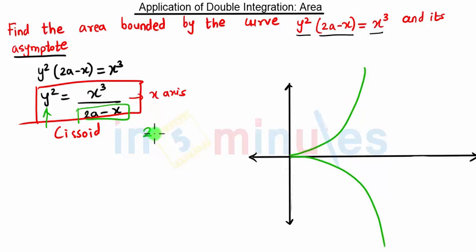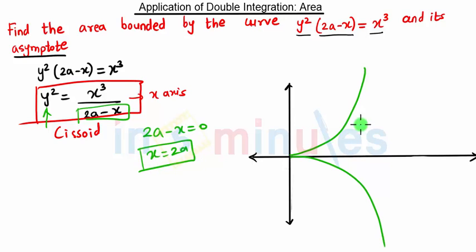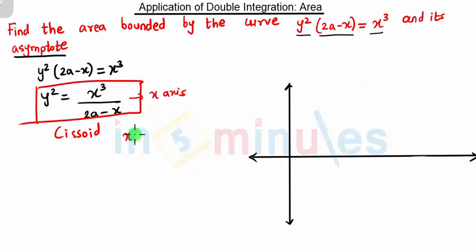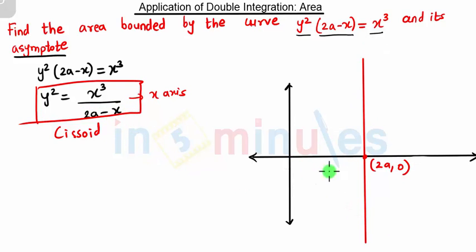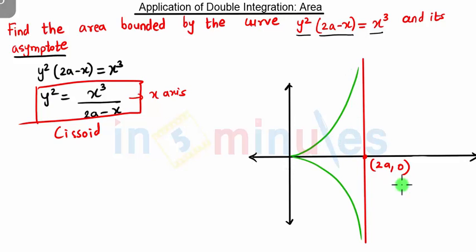To find the asymptote, write the equation as y equal to something, then put the denominator equal to zero. Setting the denominator equal to zero gives x = 2a. So x = 2a is the asymptote — a vertical line intersecting the x-axis at x = 2a. The cissoid curve and this asymptote form the region we need.